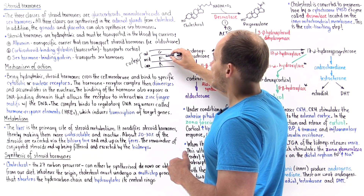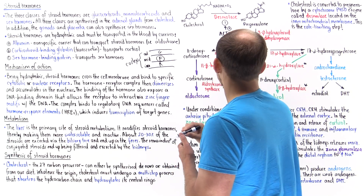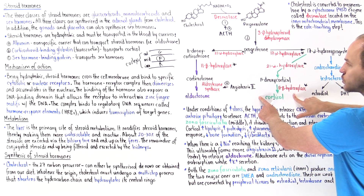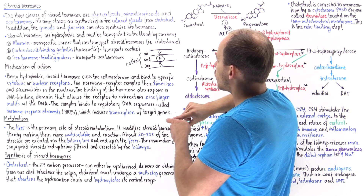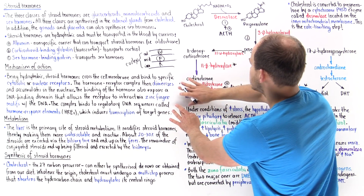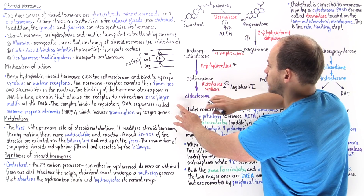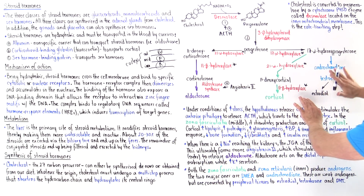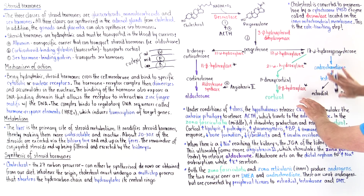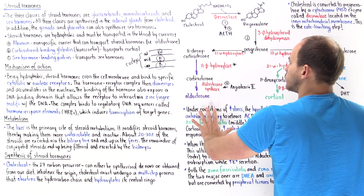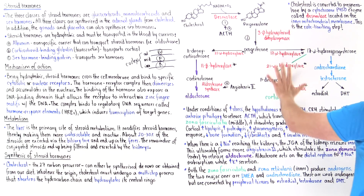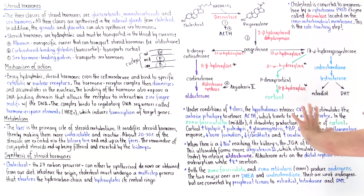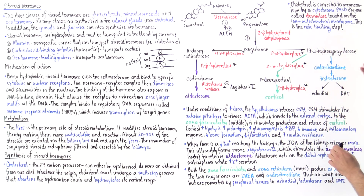In the zona fasciculata, cortisol will be formed. In the zona glomerulosa, aldosterone will be formed. And in the zona reticularis, the sex hormone pathway will predominate.